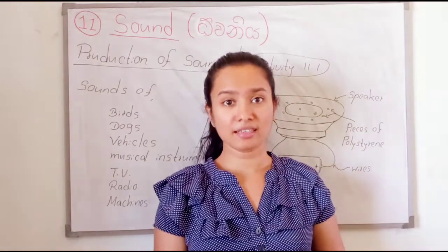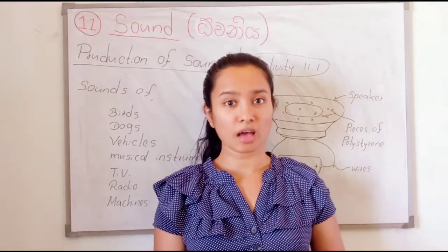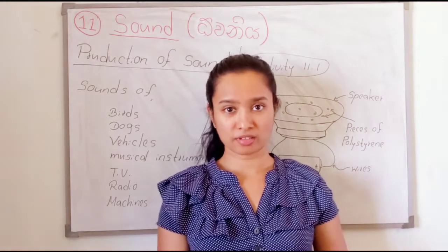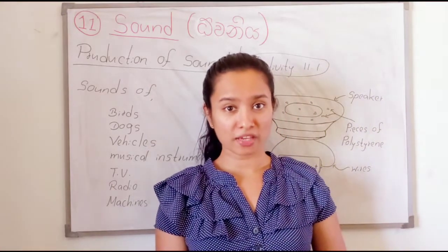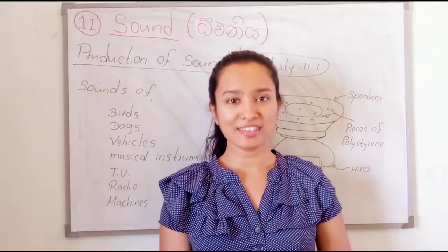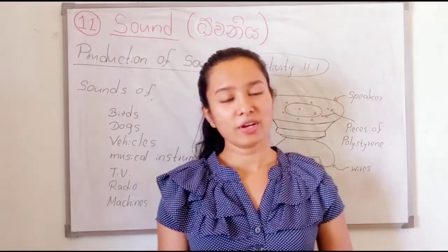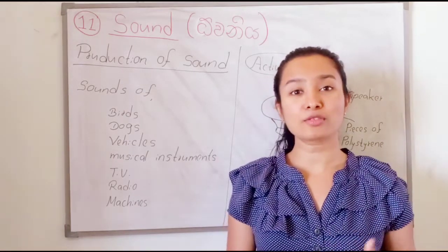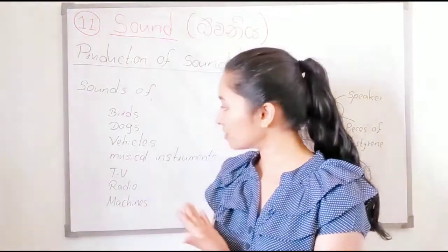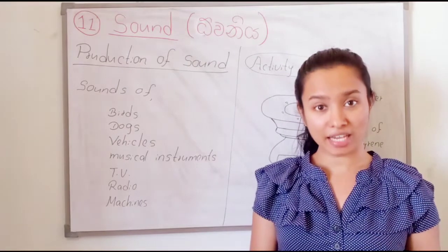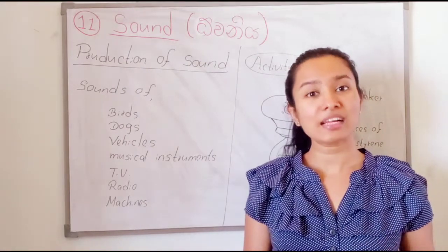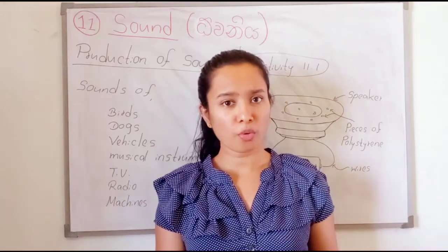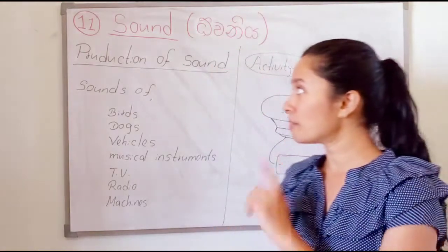When you were in grade 6, I think you have learnt the lesson on sound. In that lesson, I think you have learnt some basic information. From this lesson, we can recall that information and learn new things about sound. In our day to day life, we can hear several kinds of sounds. What are the sounds you can hear? Think about that — the sounds of birds and dogs, vehicles, sounds of musical instruments, TV, radio, and sounds of machines. There are several kinds of sounds. So, how are these sounds produced? You should know how sound is produced. Let's look at the production of sound.